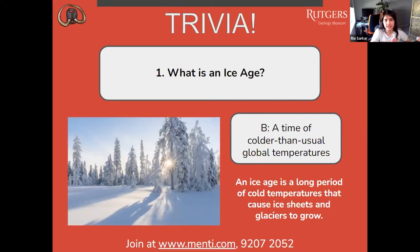The correct answer is B — a time of colder than usual global temperatures. An ice age is a long period of cold temperatures that cause ice sheets and glaciers to grow.